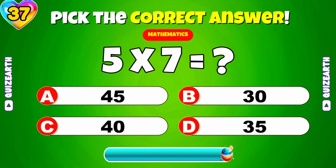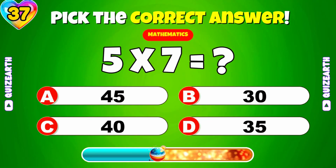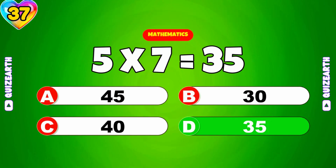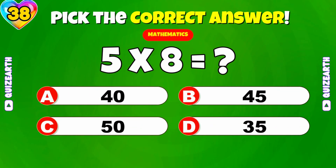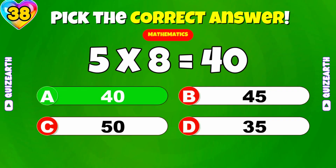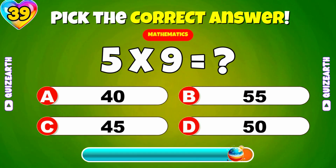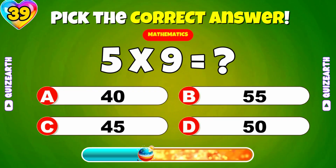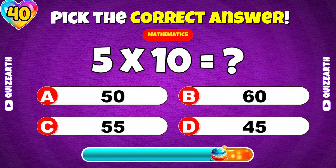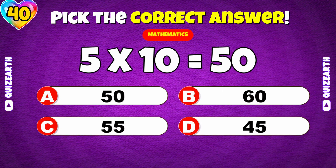What is 5 times 7? 35. What is 5 times 8? 40. What is 5 times 9? What is 5 times 10? 50. That's it!